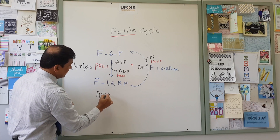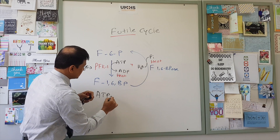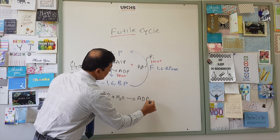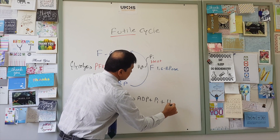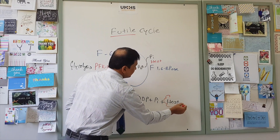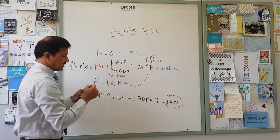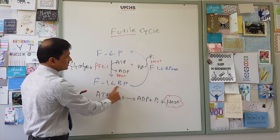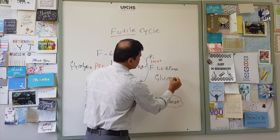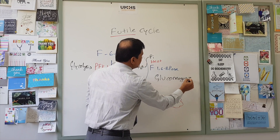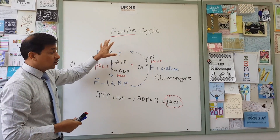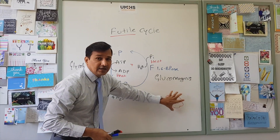In glycolysis you are spending ATP; in gluconeogenesis you are adding water, and the result is ADP plus Pi plus heat. Overall, there will be generation of heat if this reaction continues — fructose-6-phosphate into fructose-1,6-bisphosphate by glycolysis, and fructose-1,6-bisphosphate back into fructose-6-phosphate by gluconeogenesis — just cycling like this. Nothing else is coming out of this. That is the futile cycle: the only thing that comes out is heat.